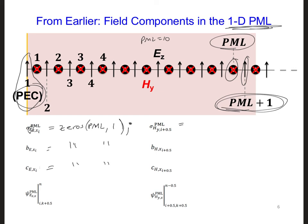And for sigma H, it's going to be one less. So we'll have zeros, PML minus one, and the same thing for here, for CH.